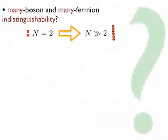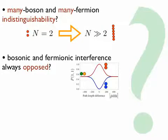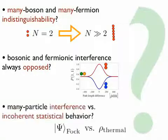Also for many particles, we would like to establish clear signatures for bosonic and fermionic behavior — for example, to characterize single photon sources. Moreover, we just saw that two bosons and two fermions exhibit opposed signatures. But does this remain true for many particles? And can we distinguish many-particle interference from incoherent statistical behavior?